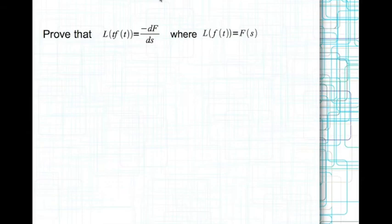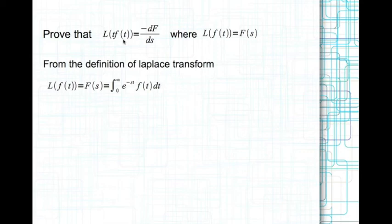The third property we are looking at is the property of differentiation of the Laplace transform. What this says is if you have the Laplace transform of f of t equal to capital F of s, and you take the first derivative with respect to s — dF by ds — then that is the Laplace transform of t times f of t. To prove that, we go back to the definition: capital F of s is the integral from 0 to infinity of e to the power of minus s t times f of t dt.